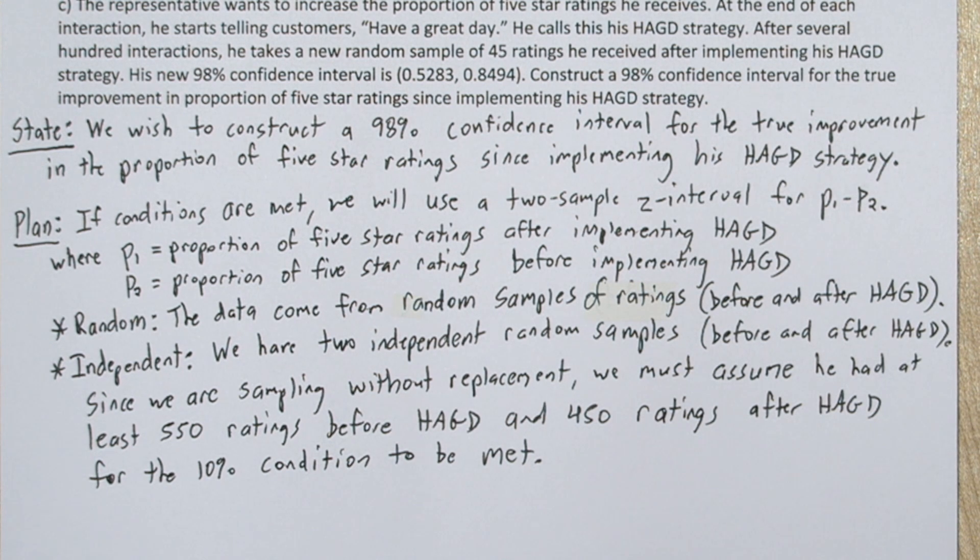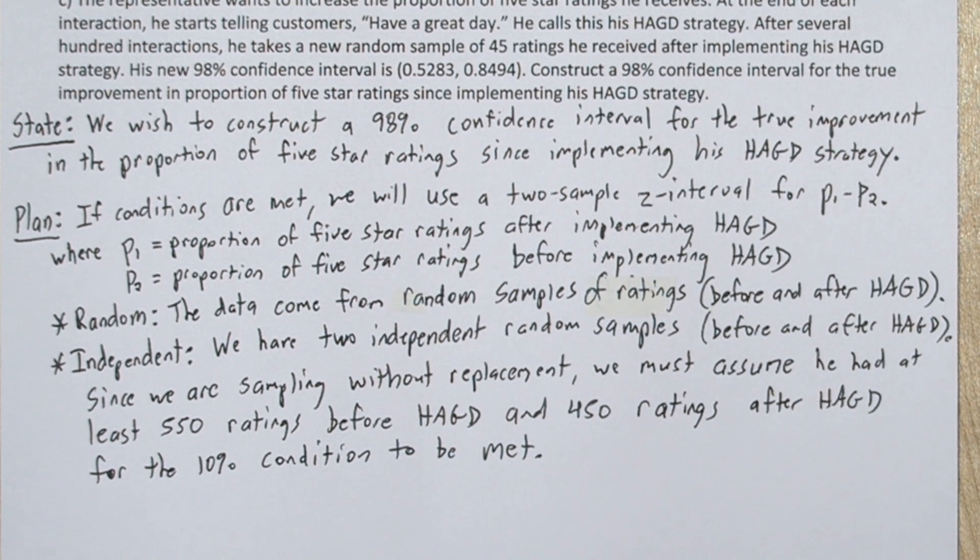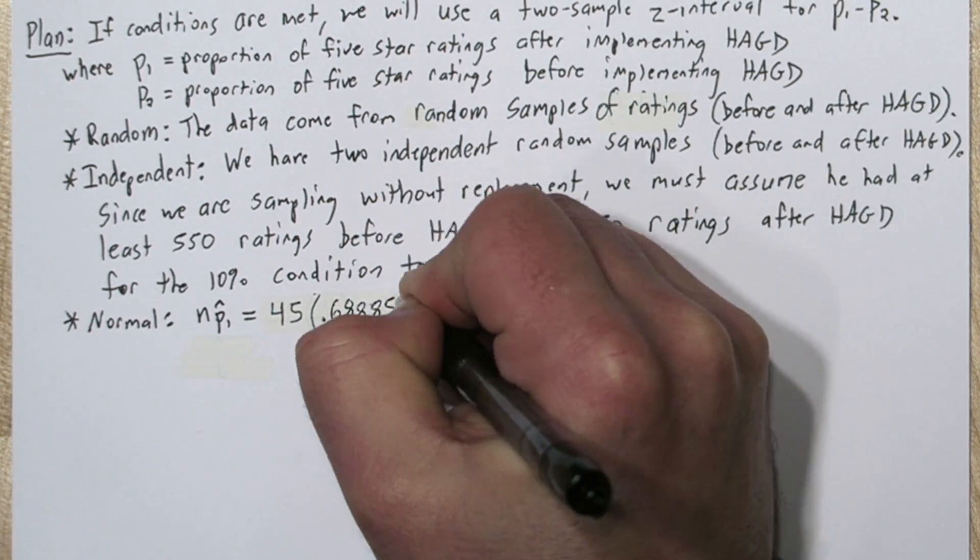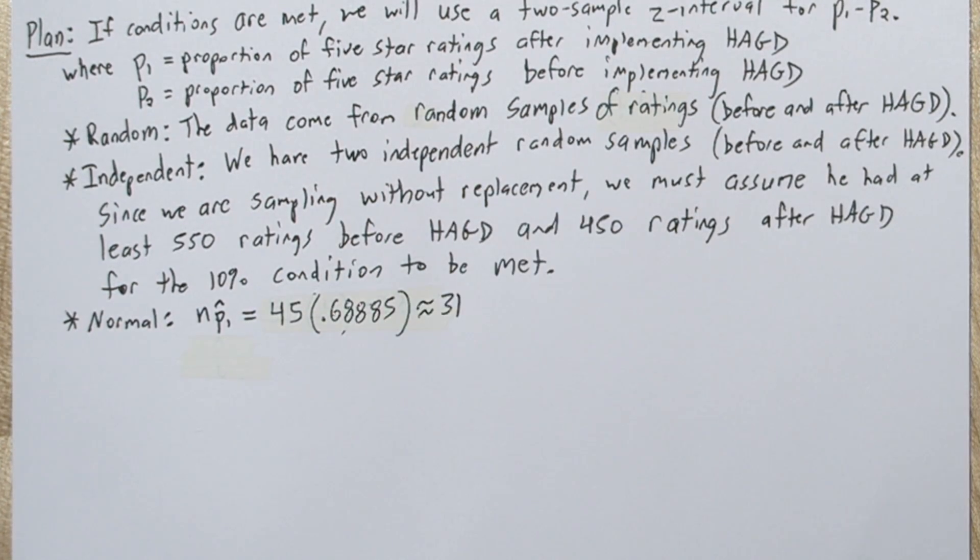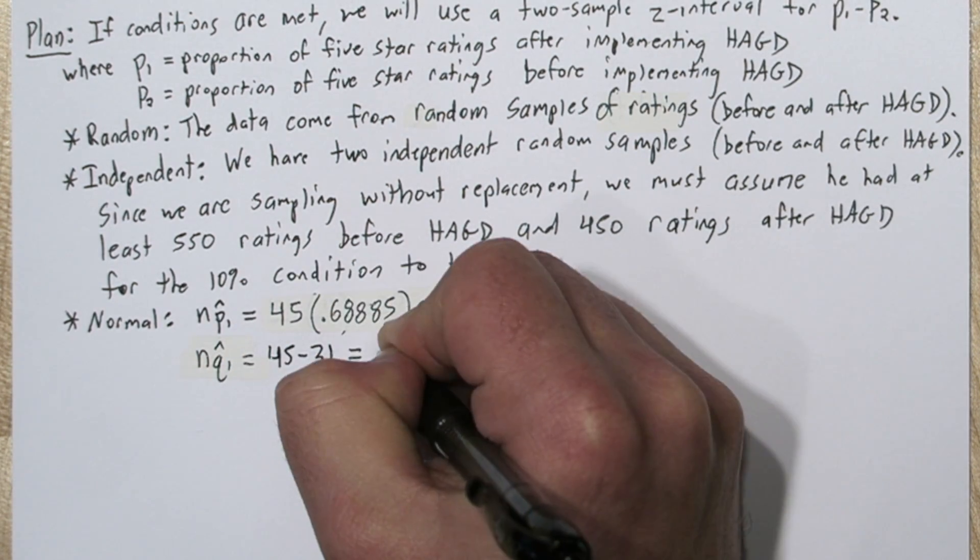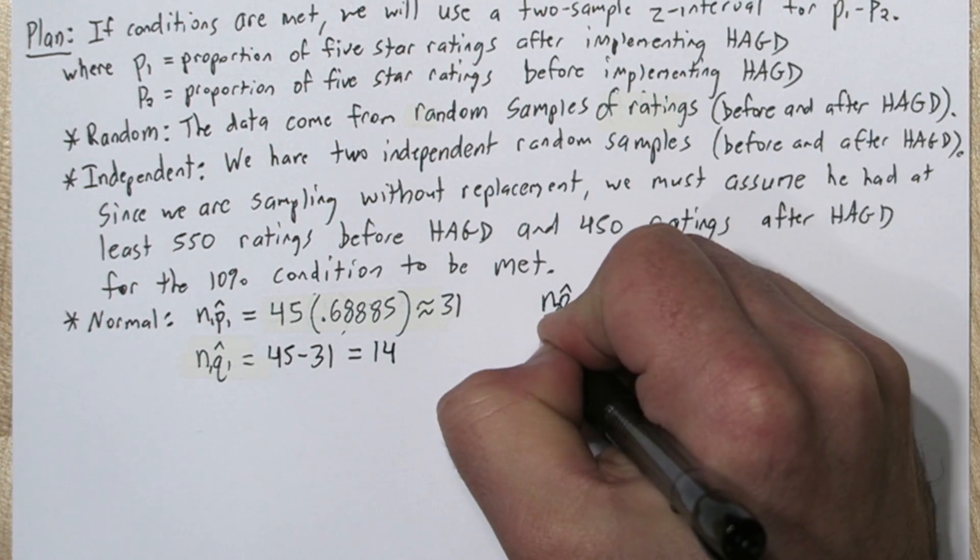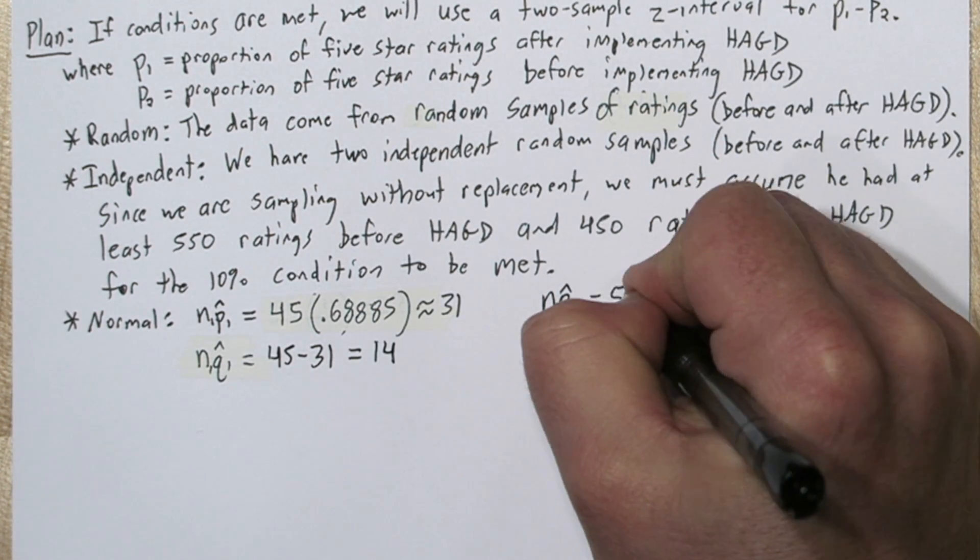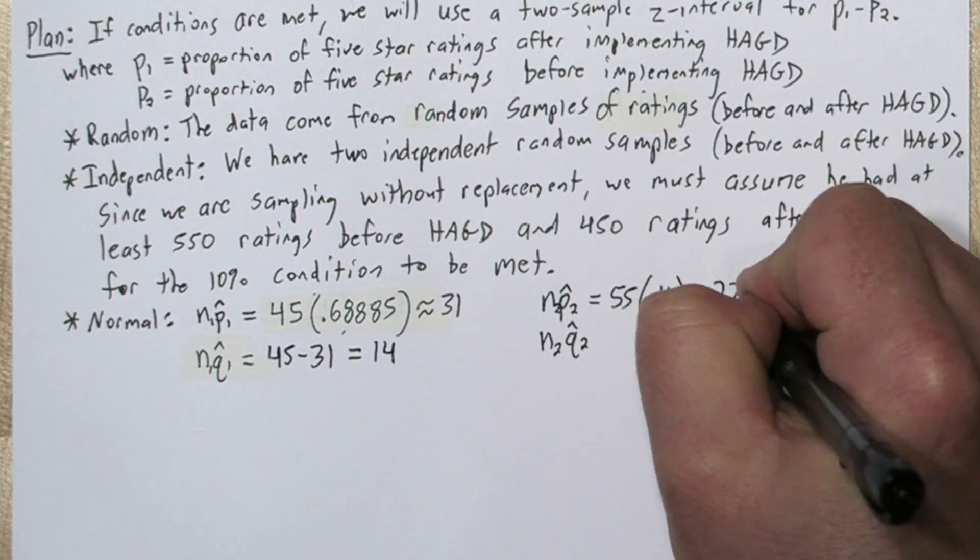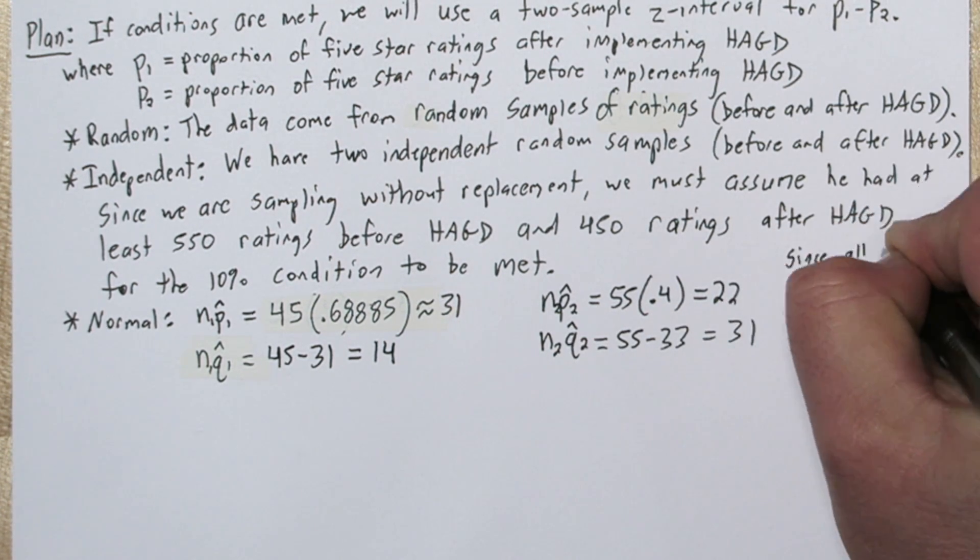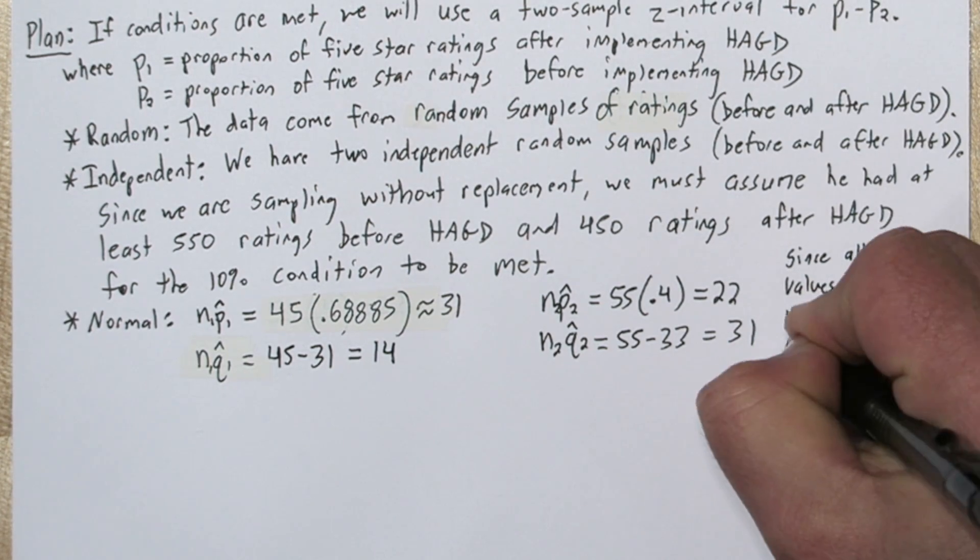Since his interval was 0.5283 to 0.8494, we can do what we did in part A and just find the middle of it. It turns out it's 0.68885, so he must have had 31 five star ratings in his sample. That means he had 14 non five star ratings in that sample. Now he took a sample of 55 ratings before his have a great day strategy, and if we multiply that by the point estimate, we know he got 22 five star ratings and 31 non five star ratings. So since all these values are at least 10, we can use normal calculations.